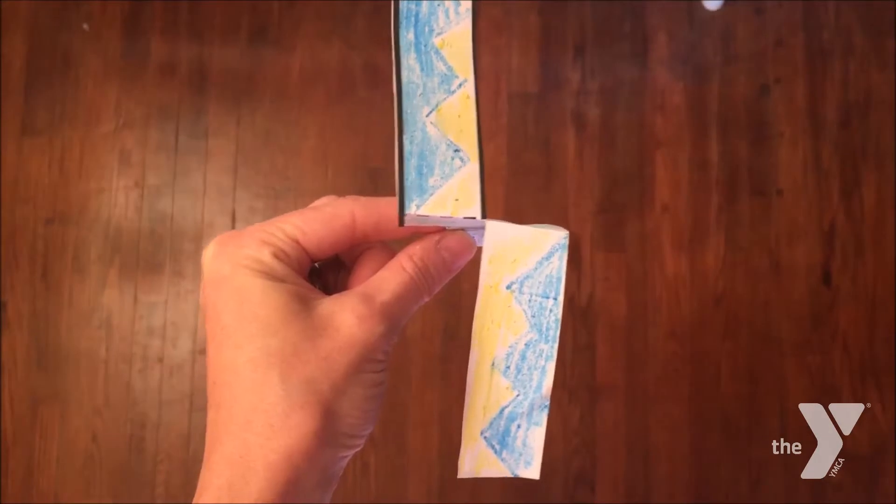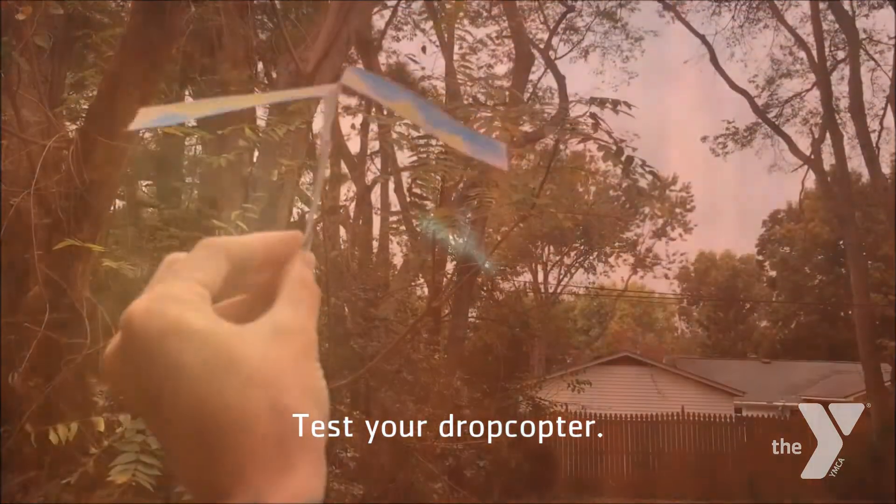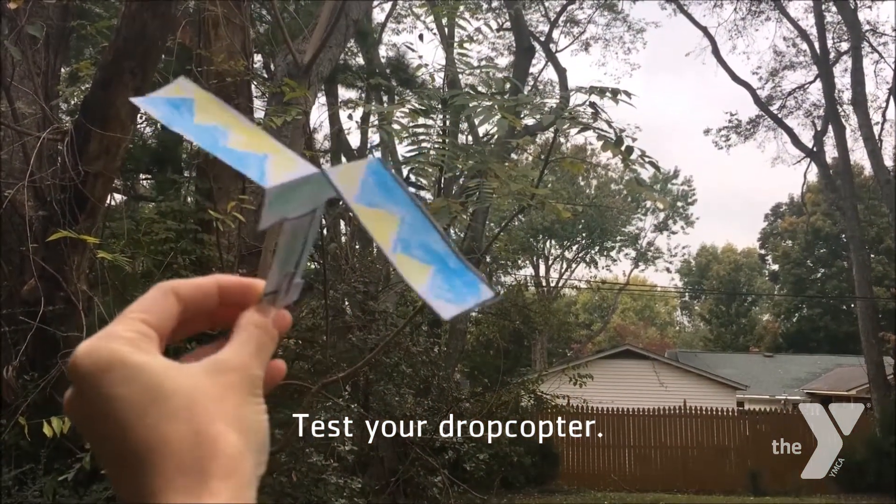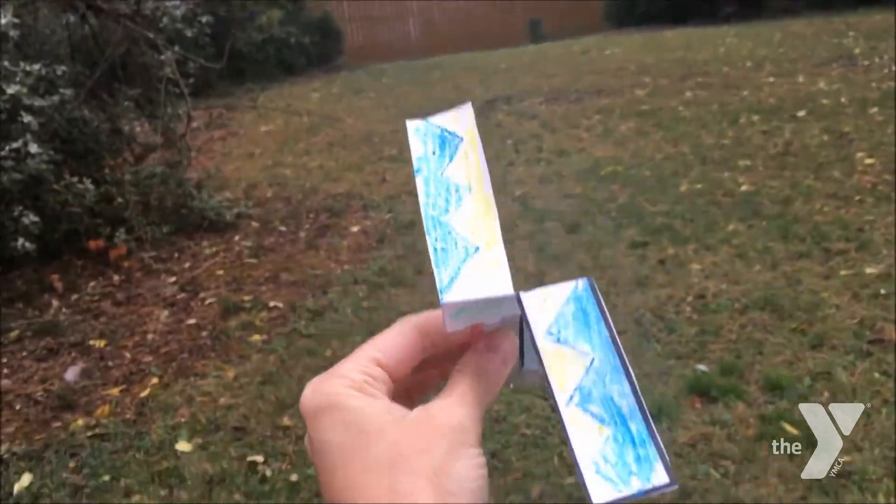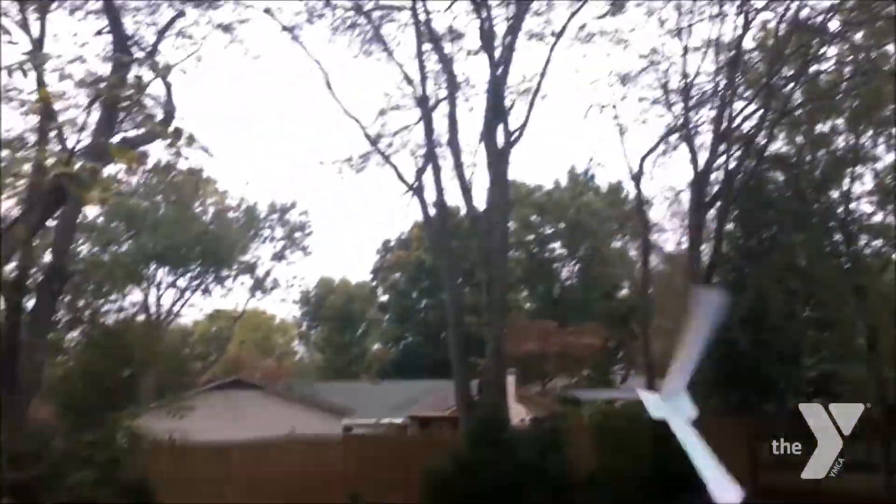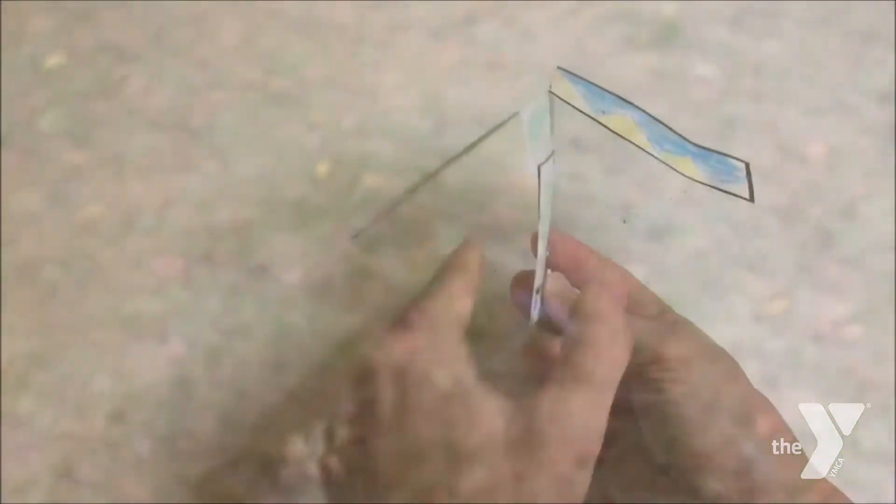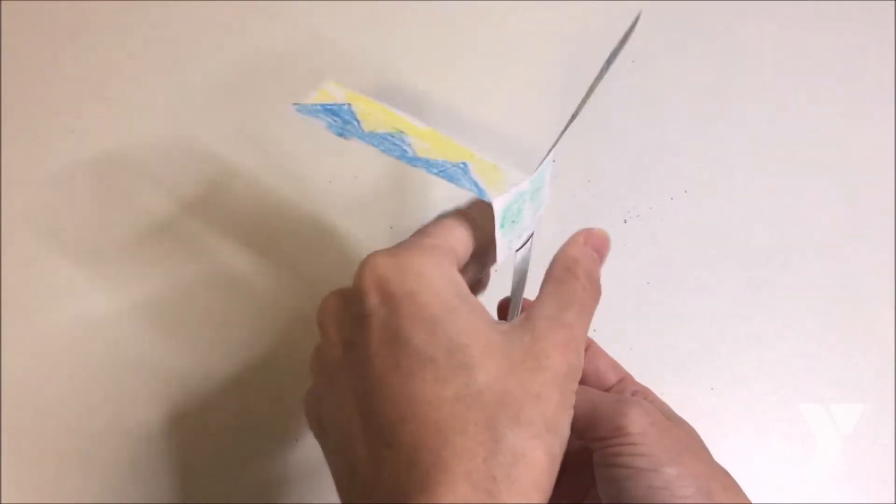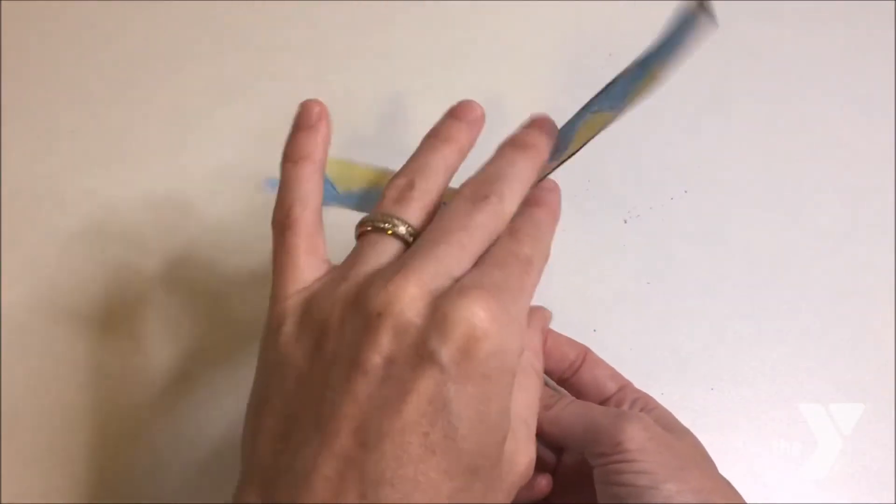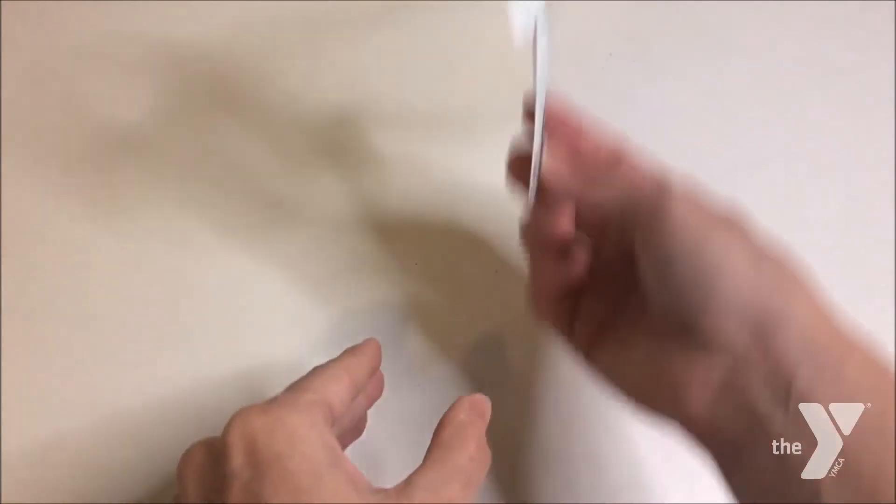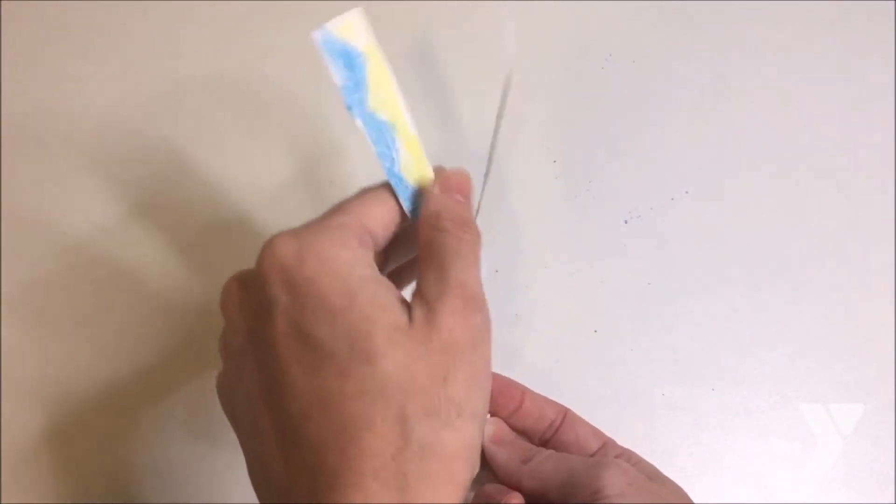If you haven't already done so, test your drop copter. Notice how fast or how slow it falls. Experiment with folding the wings more upward, then more downward, and see if that changes how fast the drop copter falls. Hint, I think it will.